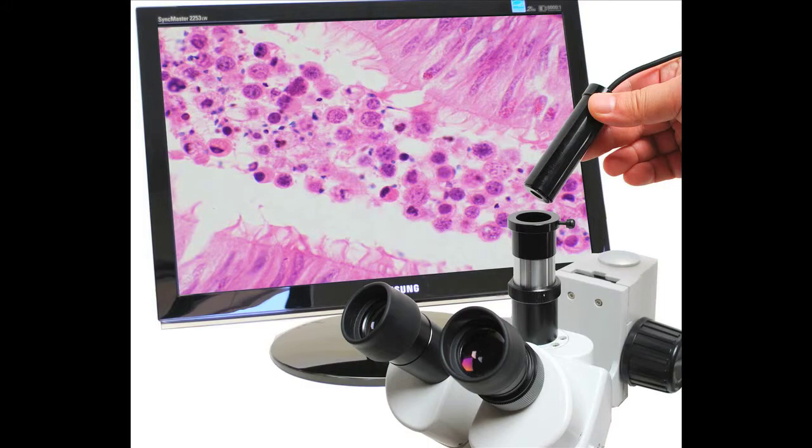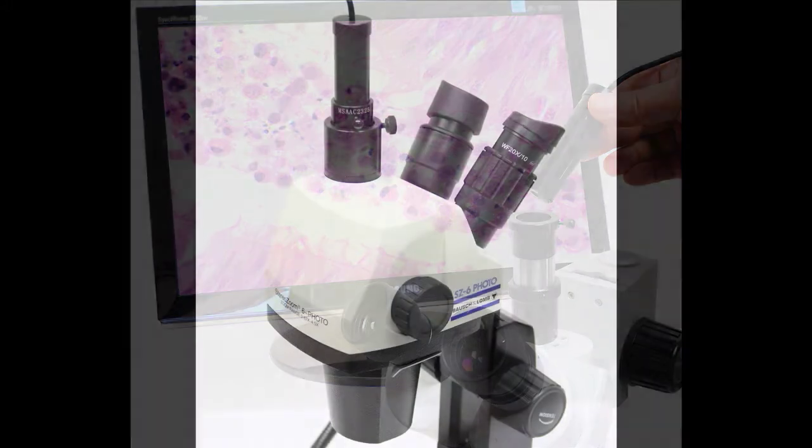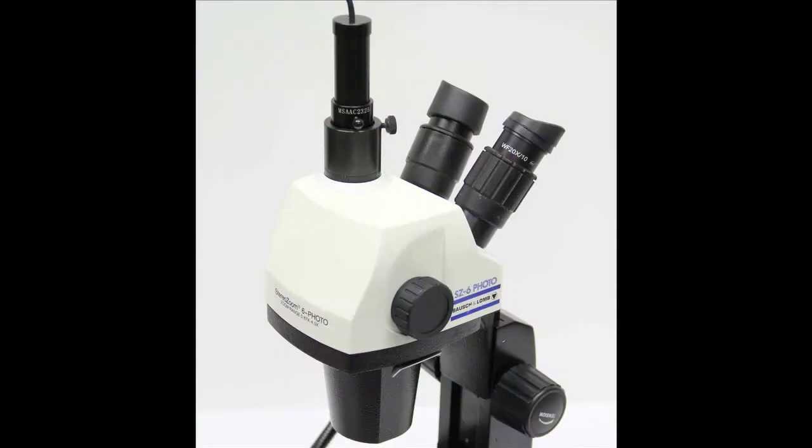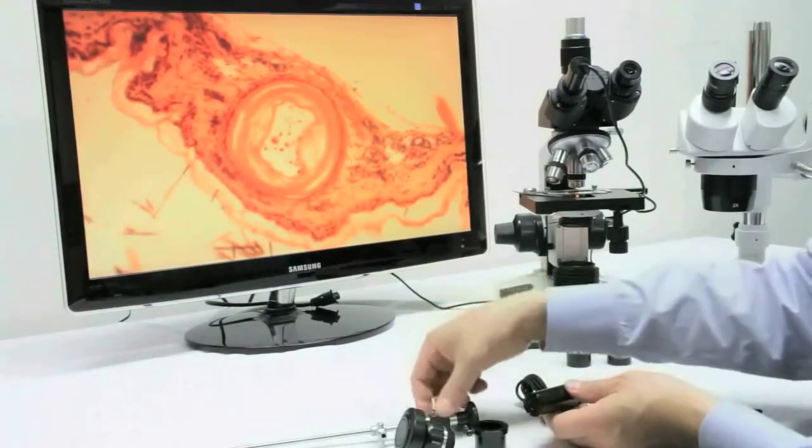The AM422XN can fit directly into a C-mount or trinocular slot if the slot is 23mm. You can also connect to a rigid scope or flexible scope by simply connecting to a coupler.